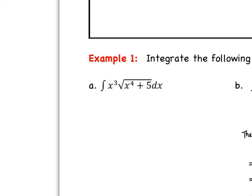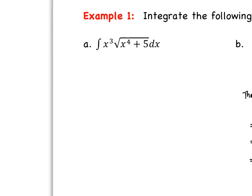So let's look at this first example. Let's integrate the following. For part a, we want to integrate x cubed times the square root of x to the fourth plus 5 dx. The biggest thing is to recognize what should we let u be, and then when we take the derivative of that, are we left with the other portion? Essentially we want the u and the du portion to cover this entire thing. So let's go ahead and let u be this inside, x to the fourth plus 5.